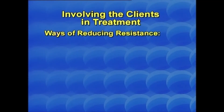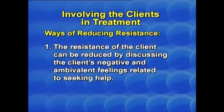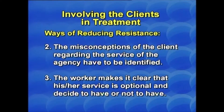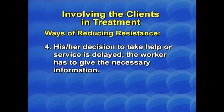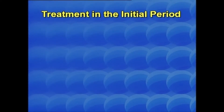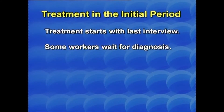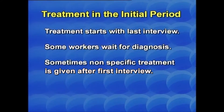Ways of reducing resistance: the client's resistance can be reduced by discussing the client's negative and ambivalent feelings related to seeking help. Misconceptions of the client regarding the agency's services must be identified. The worker makes it clear that the service is optional and the client can decide to have or not have it, and the decision to take help may be delayed. The worker must give necessary information to the client. Treatment in the initial period starts with the first interview; some workers wait for diagnosis, and sometimes non-specific treatment is given after the first interview.